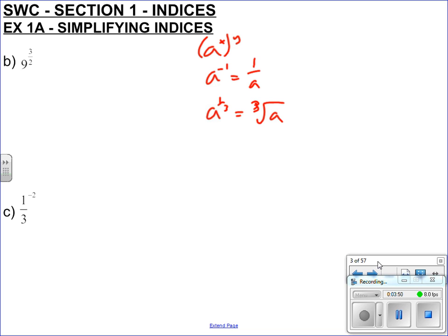In this case, we've got 9 to the 3 over 2. Use this rule here - split each section up. That's the same as 9 to the half all to the power of 3. Now you can deal with this separately. 9 to the half is the same as square root of 9 all cubed, which is 3 cubed, which is 27. So that's that finished.